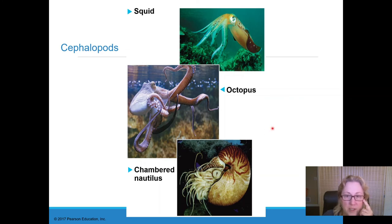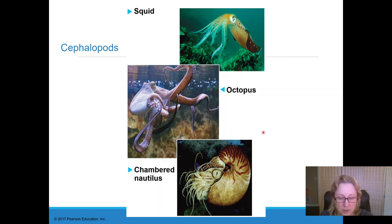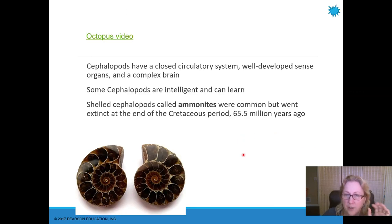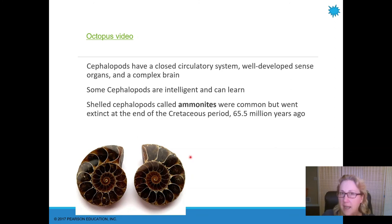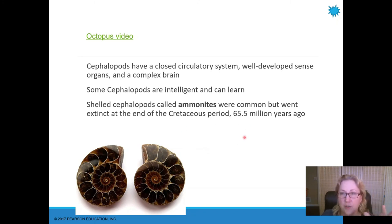Nautiluses have been reduced to very few species. Squid are the most successful by number of species. There was a large group of extinct cephalopods called ammonites that had shells like nautiluses and were extremely abundant — their fossilized shells are so common they're made into jewelry. The ammonites went extinct when the dinosaurs did, as a casualty of that asteroid impact. The nautilus, squid, and octopus survived.